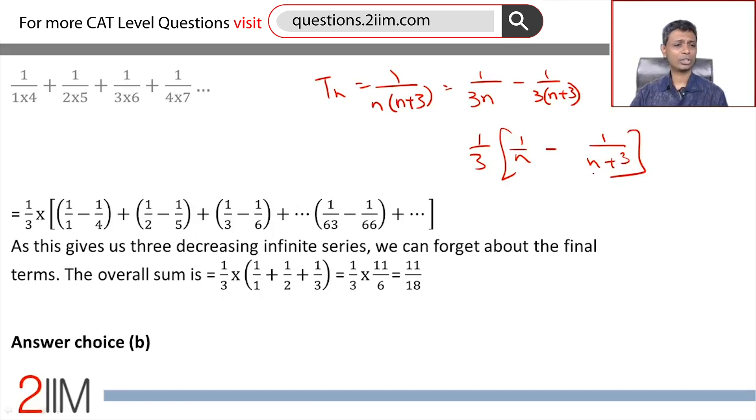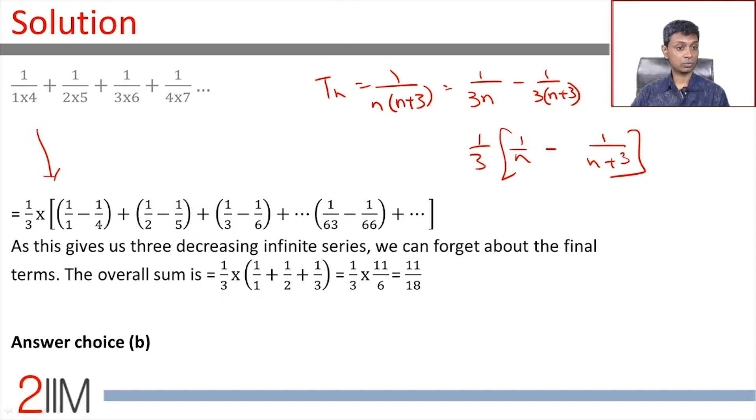All we need to do is plug in this expression. This becomes 1/3 times (1/1 - 1/4), (1/2 - 1/5), (1/3 - 1/6), all the way infinitely. What does it give us? It's going to be 1/1 - 1/4. Three terms later, we'll have 1/4 - 1/7. Three terms later, 1/7 - 1/10, and so on.